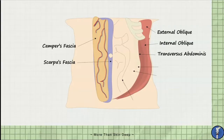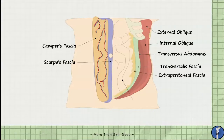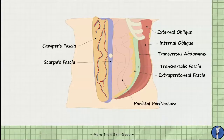Deep to the transversus abdominis is the transversalis fascia, followed by the extraperitoneal fascia. Then you've reached the parietal peritoneum, deep to which is the visceral peritoneum. Deep to all of these layers of the anterior lateral abdominal wall are the abdominal viscera.